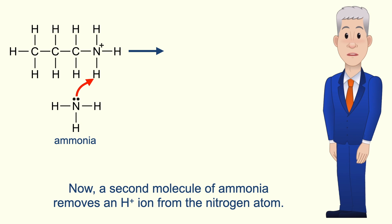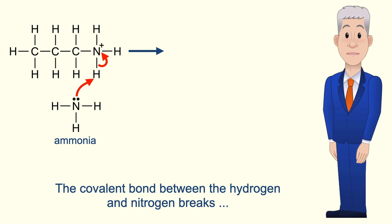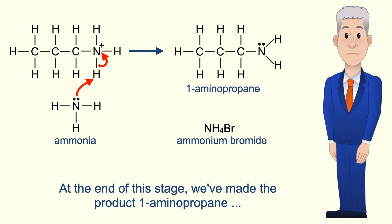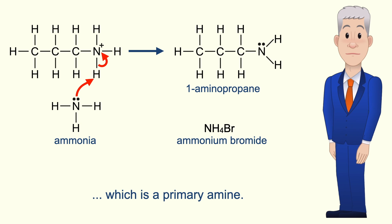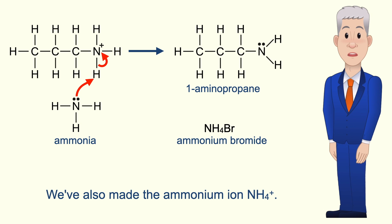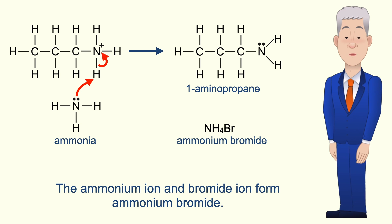A second molecule of ammonia removes an H+ ion from the nitrogen atom. The covalent bond between the hydrogen and nitrogen breaks, with both electrons moving on to the nitrogen. At the end of this stage we've made the product 1-aminopropane, which is a primary amine. We're going to be looking at amines in much more detail in a later topic. We've also made the ammonium ion NH4+. The ammonium ion and bromide ion form ammonium bromide.